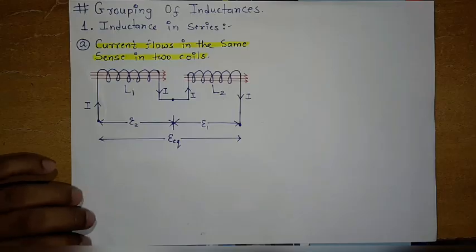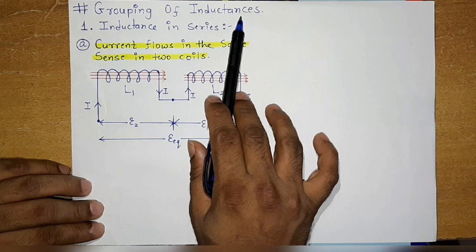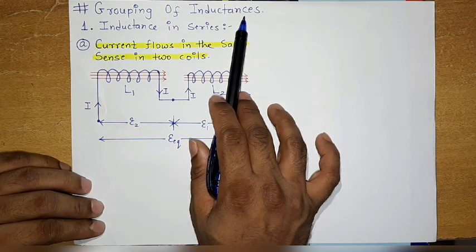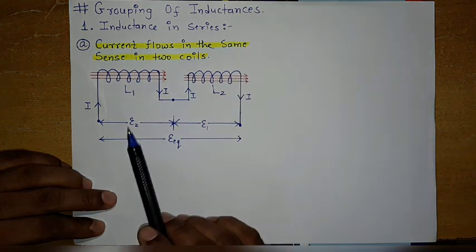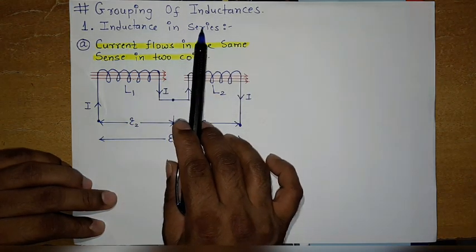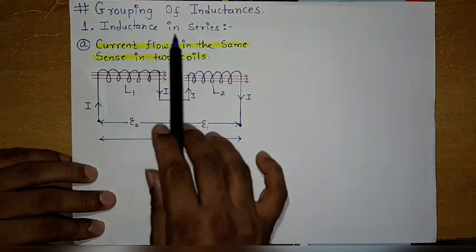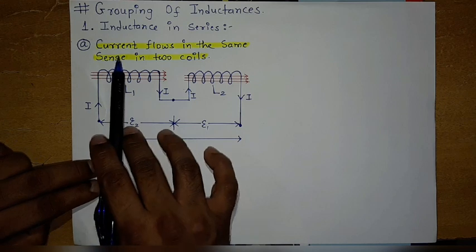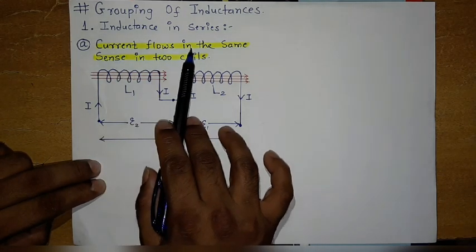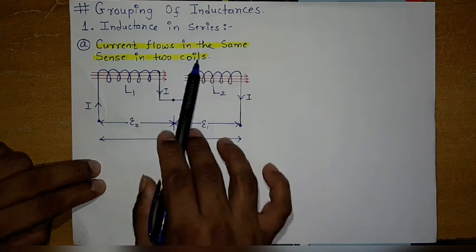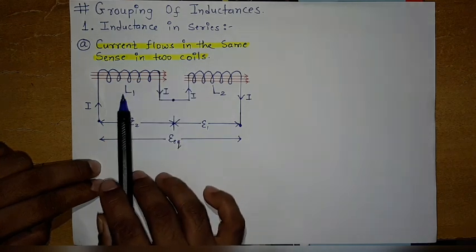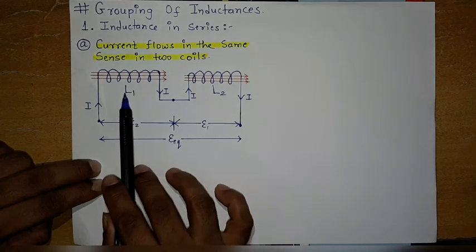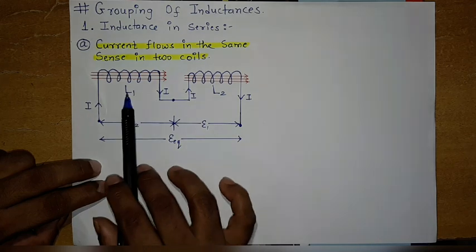Hello friends, today's topic is grouping of inductances, which is also known as combination of inductances. We have two combinations: series combination and parallel combination. The series combination is further divided into two types. The first is the combination in which the current flows in the same sense in the two coils, as you see here with inductors L1 and L2 connected in series.